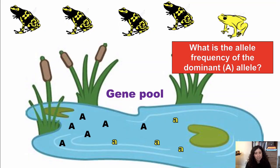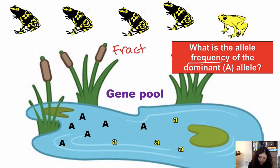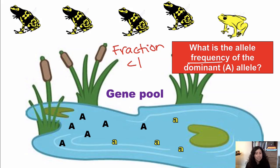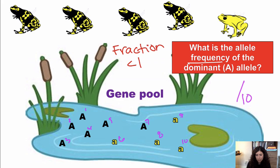This translates into being able to calculate frequencies of these different genes. A frequency is just a fraction — always less than one, like a percent expressed as a decimal. To find the allele frequency of the dominant A allele, first count the total number of alleles: we have 10 total. Then count how many are dominant big A's: we get 6. Six out of 10 simplifies to 0.6.